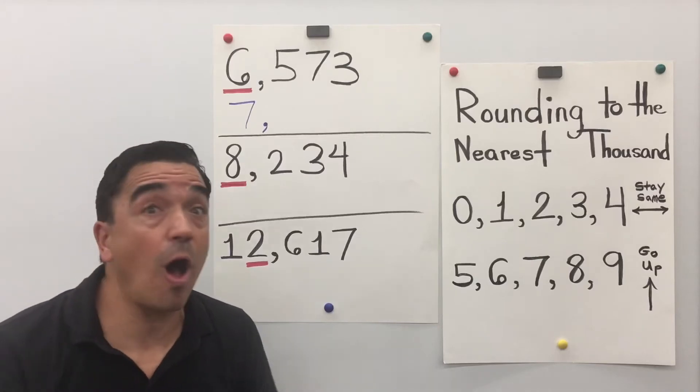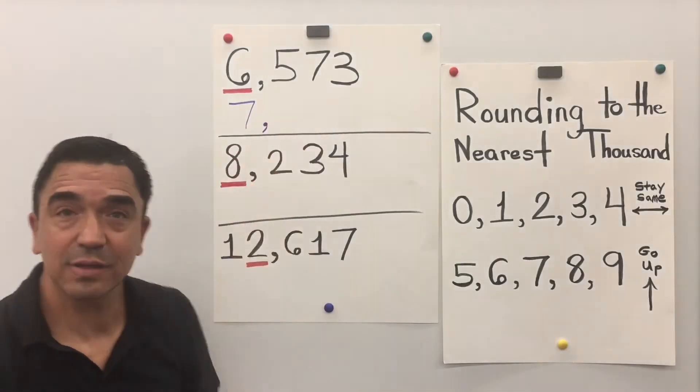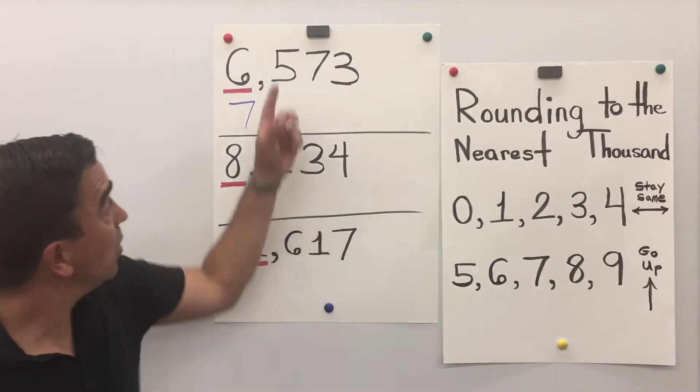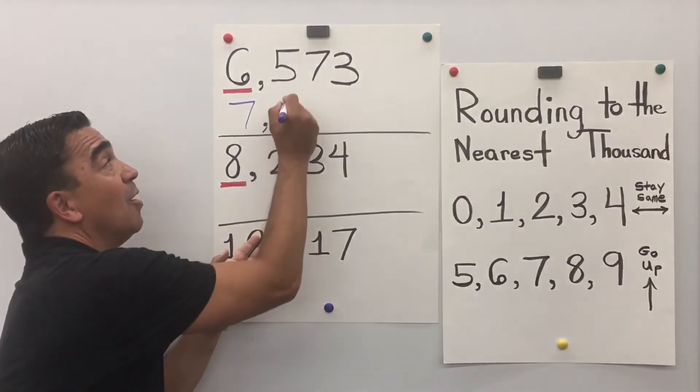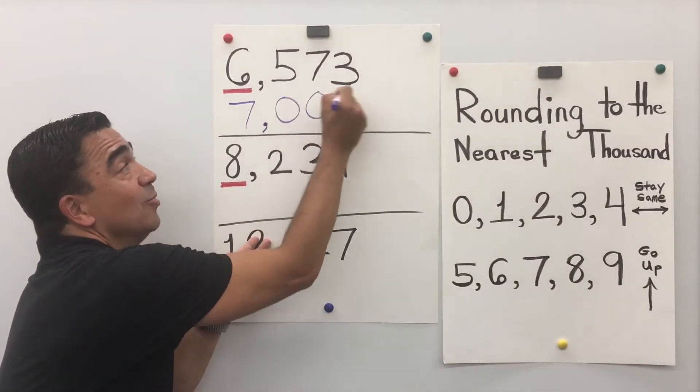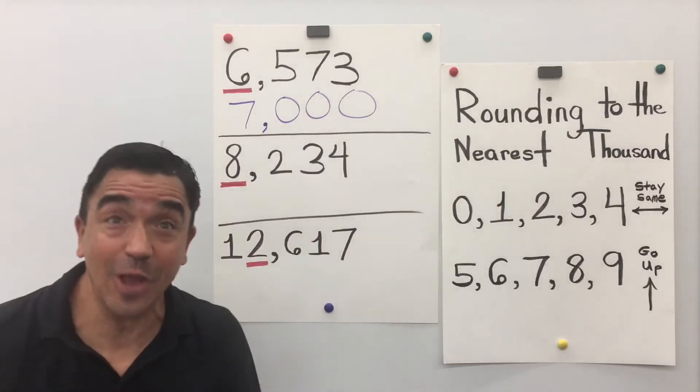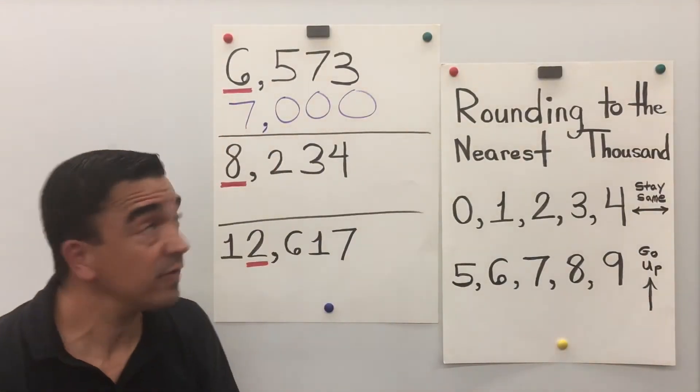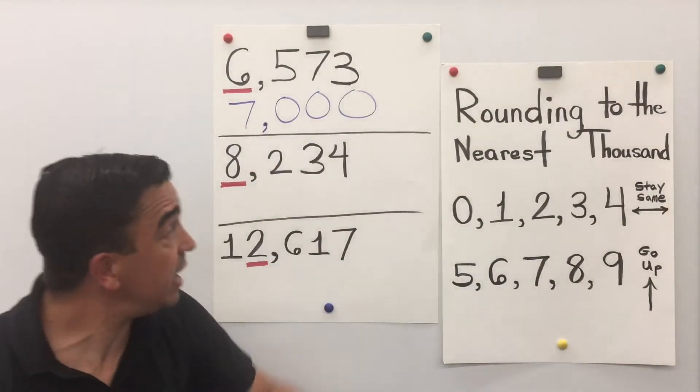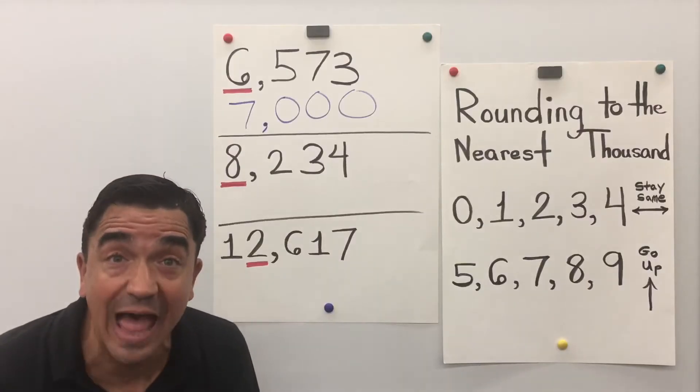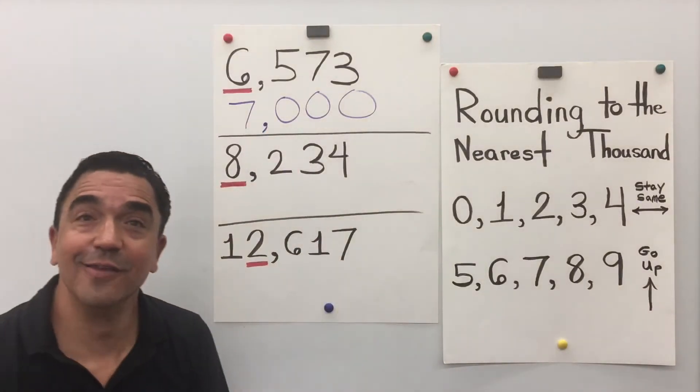And all the digits after become 0s. 1, 2, 3. So, 6,573 rounded to the nearest thousand is 7,000.